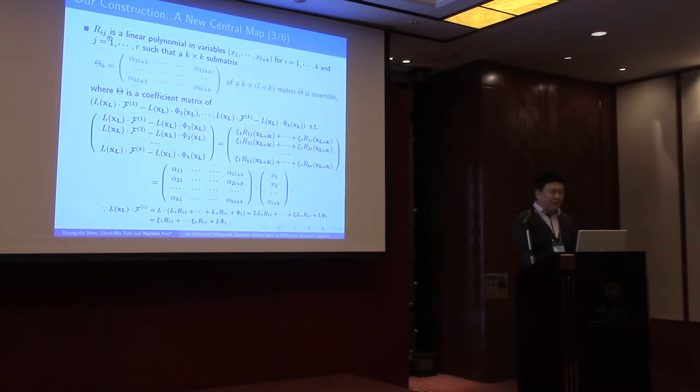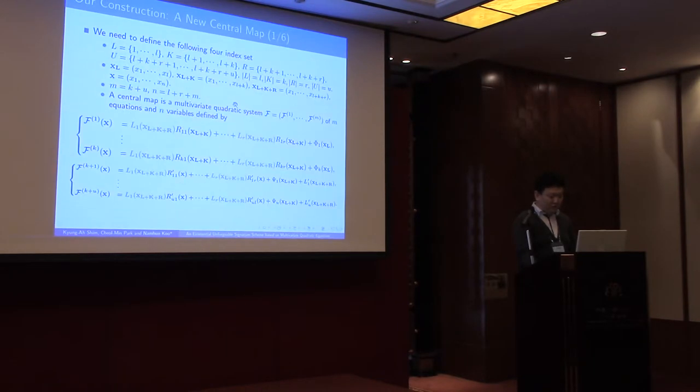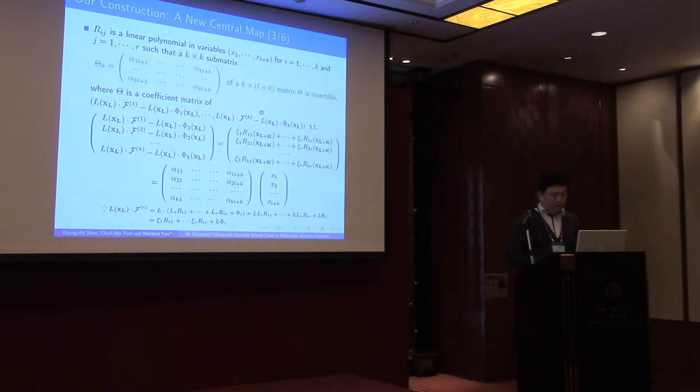R_ij in the first layer is a linear polynomial in these variables. This relation comes from these equations where the last equality is from the relation L in hidden layer. And the other equalities are trivial. So this term minus this term equals to this term. So we get this equality. Each entry of this matrix is a linear polynomial. So we can write this matrix as this coefficient matrix form. Theta is this coefficient matrix. And theta_k is this k by k invertible submatrix of theta.